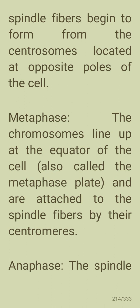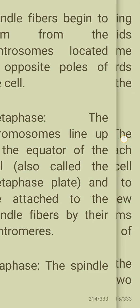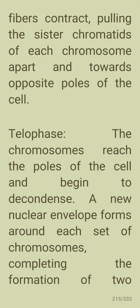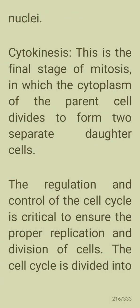In metaphase, the chromosomes line up at the equator of the cell, also called the metaphase plate, and are attached to the spindle fibers by their centromeres. In anaphase, the spindle fibers contract, pulling the sister chromatids apart towards opposite poles. In telophase, the chromosomes reach the poles and begin to decondense, and a new nuclear envelope forms around each set of chromosomes, completing the formation of two nuclei.